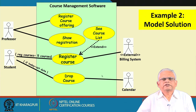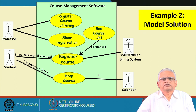Till now we have seen some basic elements of use case modeling — the different symbols in the use case diagram, factoring of the use case, and how to identify use cases — illustrated with a couple of examples. In the next lecture we will discuss a few more examples, identify some good principles in the development of a use case model, and then move on to the class diagram. Thank you.